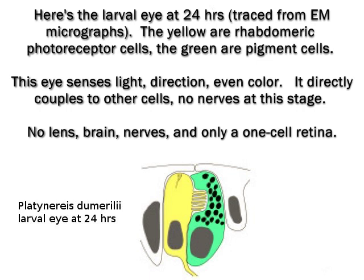The yellow are rhabdomeric photoreceptor cells; the green are pigment cells. These two cells are the simplest possible visual system. This eye senses light, direction, and even color. It directly couples to other cells — no nerves at this stage. No lens, brain, or nerves, and only a one-cell retina.